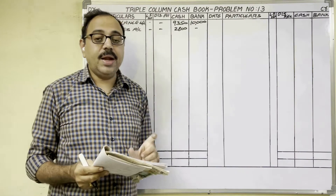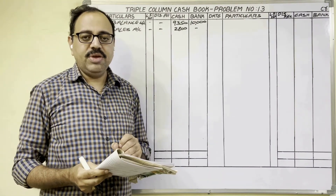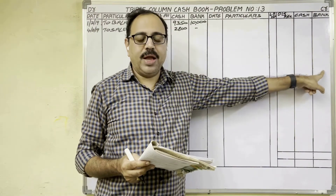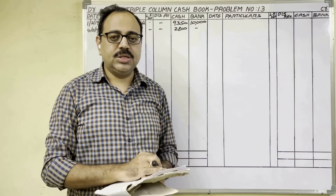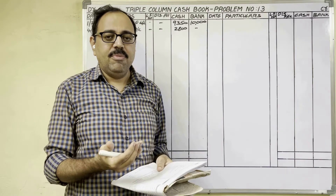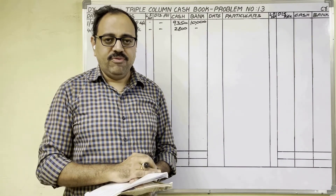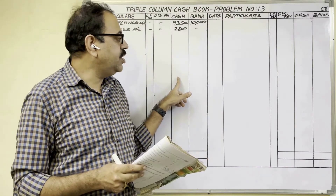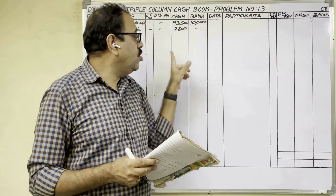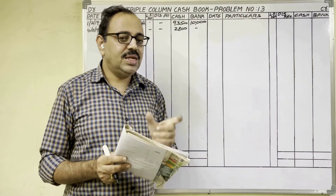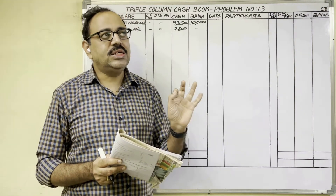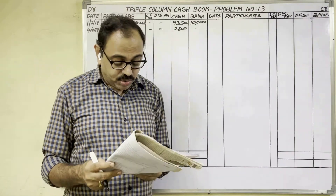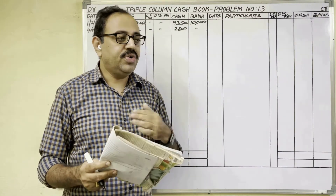Always remember: if Phone Pay, Google Pay, net banking, credit card, or debit card are mentioned, the amount should be in the bank column — either debit side or credit side. The reason is all these apps are linked with the bank, so when you receive money through these apps it is deposited directly into our bank account, and when we pay through these apps money goes from our bank account. Cash does not come into or go from the firm, so do not write in cash columns. First check whether it is a receipt or payment: if receipt, write debit side bank column; if payment, write credit side bank column.